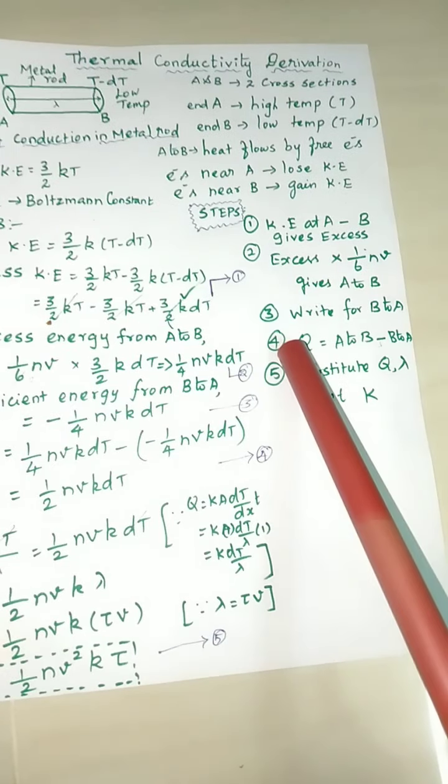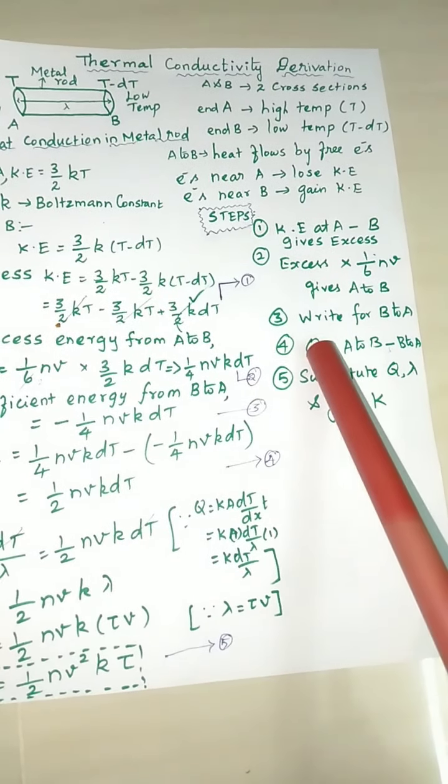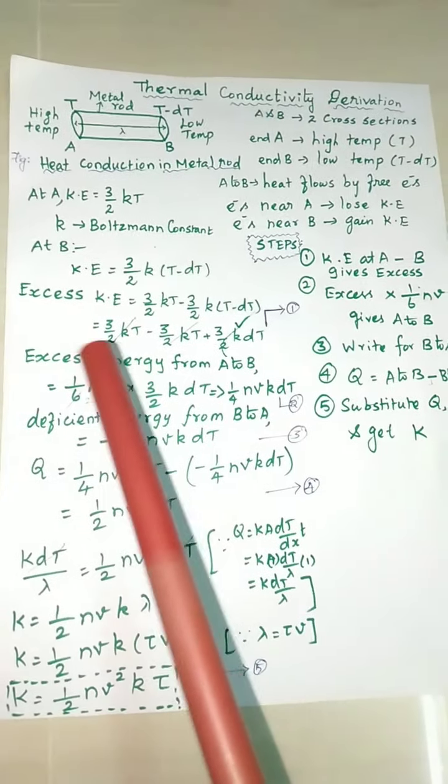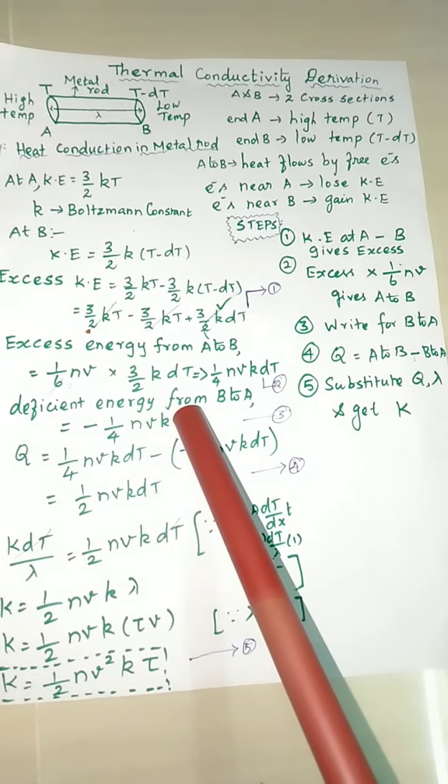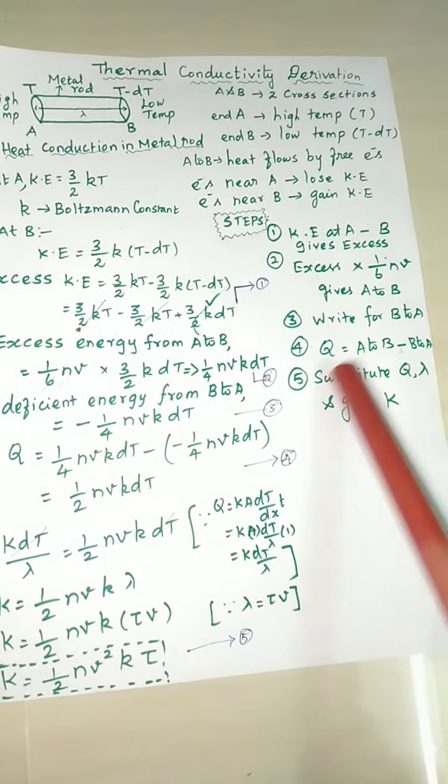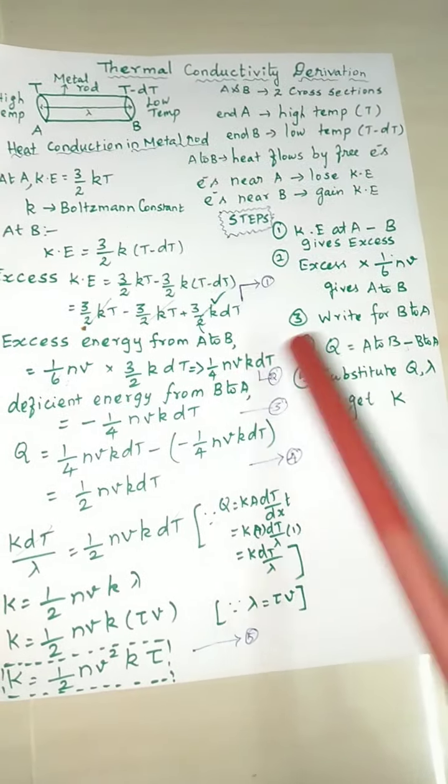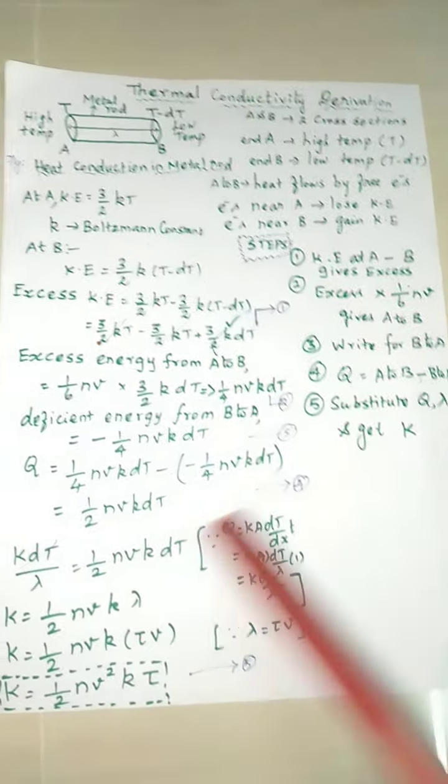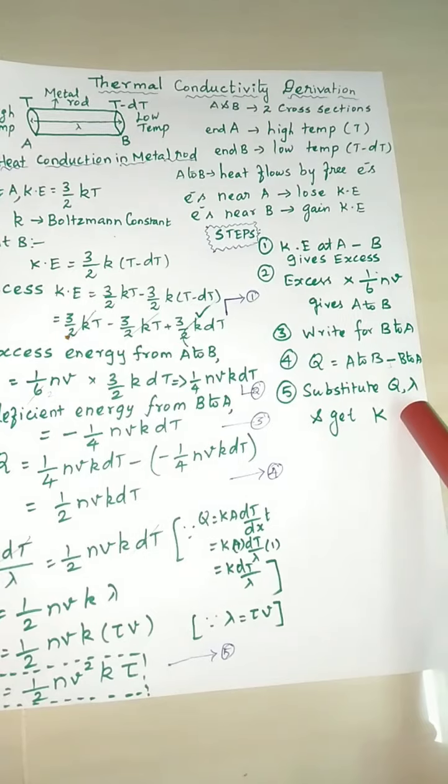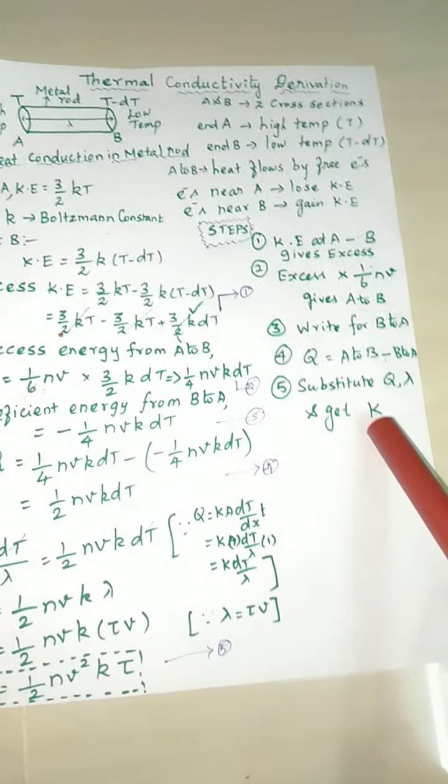Q is the amount of heat energy, so we can add A to B and minus B to A value. We substitute Q formula, substitute for lambda, then we can get thermal conductivity K.